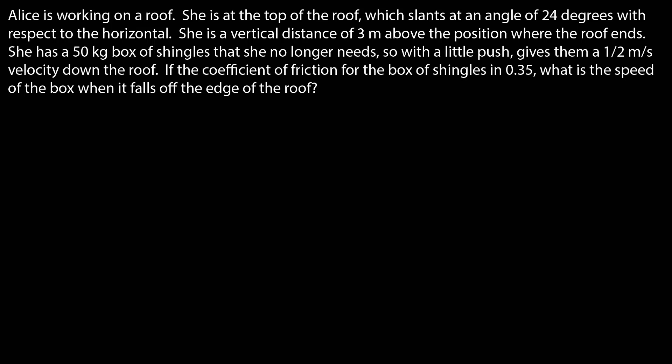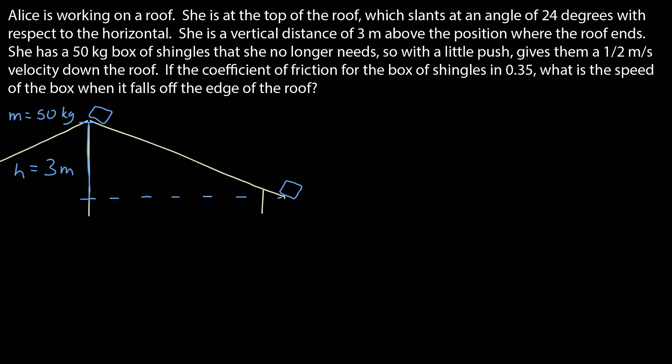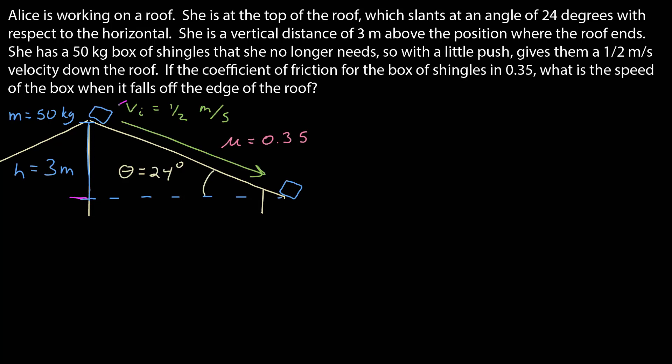We'll use conservation of energy. The first step is a picture. We have this roof, and here's the edge of the roof. She starts 3 vertical meters above that at the top of the roof. So we have this box of shingles, 50 kilograms, and it slides down the edge along the roof. It starts with an initial velocity of a half meter per second. Coefficient of friction is 0.35. The roof makes an angle of 24 degrees with respect to the horizontal.